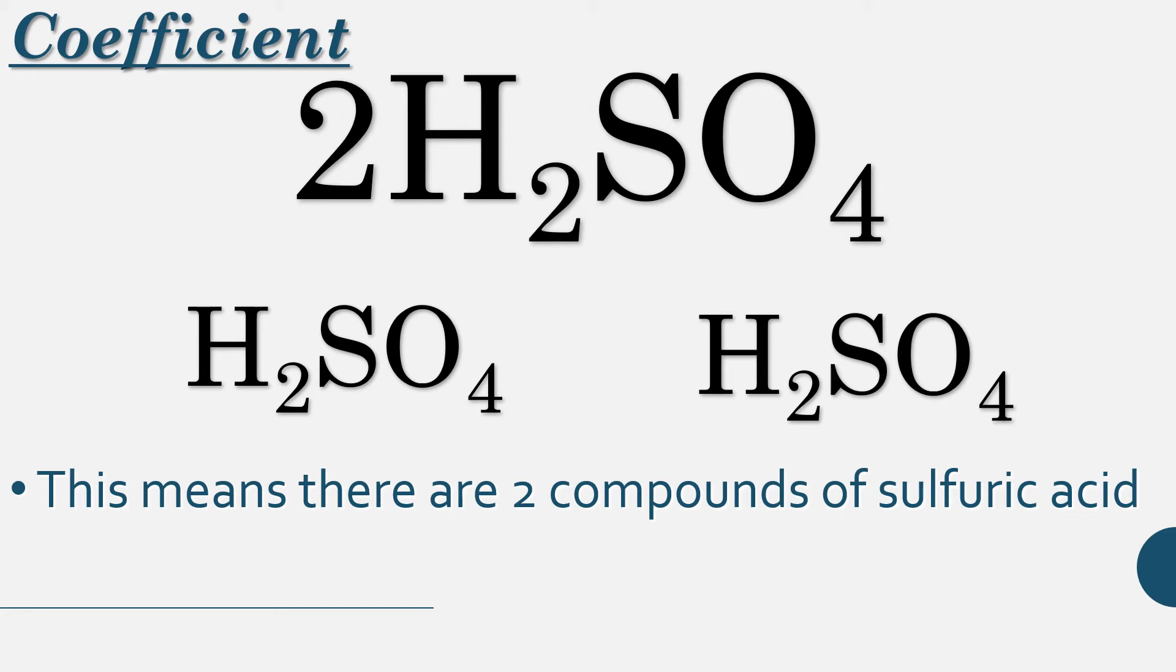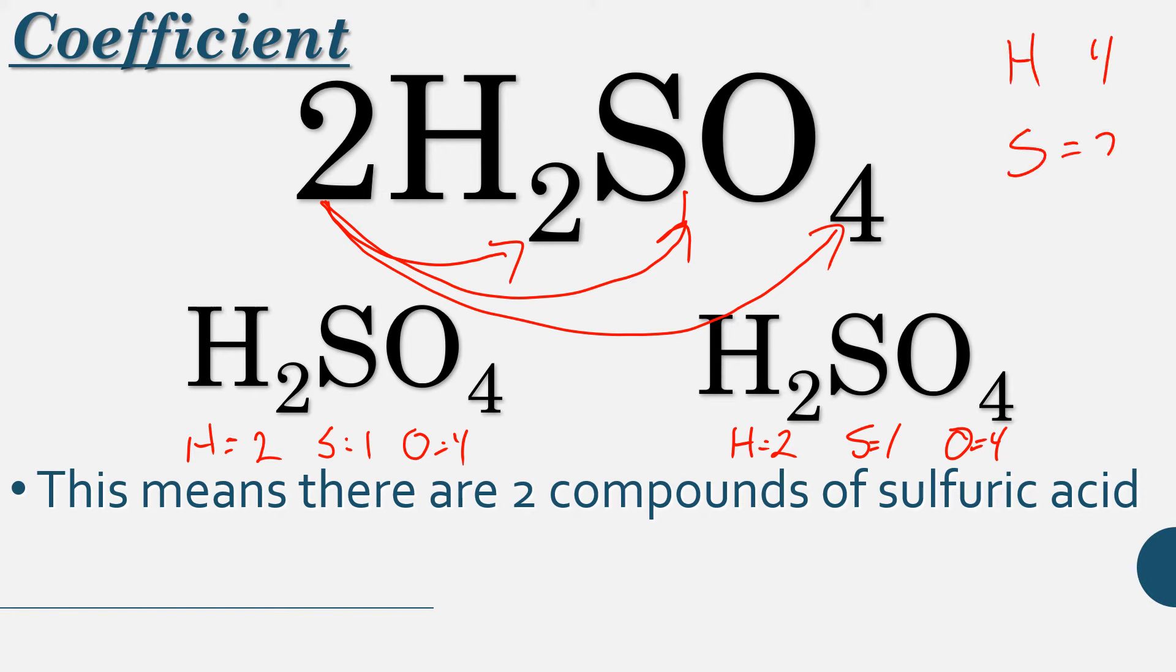So what does that mean for counting? Well, an easy way to do this is to basically just be like, okay, there are 2 of these. 2 times 2 is 4, 2 times 1 is 2, 2 times 4 is 8. And if we count these up individually, we'll see hydrogen here has 2, sulfur 1, oxygen 4, hydrogen 2, sulfur 1, oxygen 4. And if we add these together, 4, 2, 8. So you can kind of just skip it. It's like multiplying, like the distributive property in math.